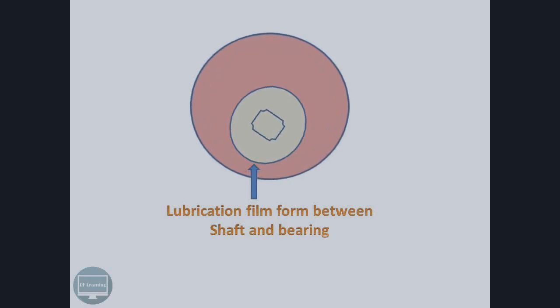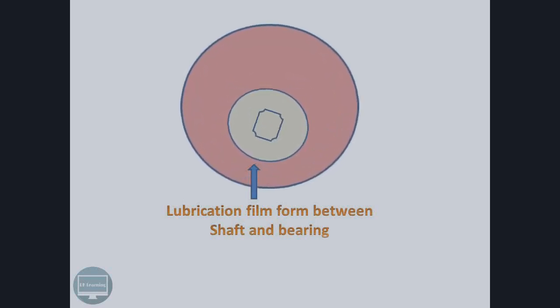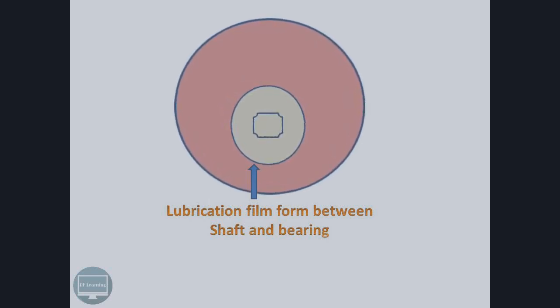This film creates smooth working of the shaft. As we increase the speed of the shaft, this oil film forms between the shaft and bearing. This is the action of hydrodynamic bearing — the film is created by the rotation of the shaft.